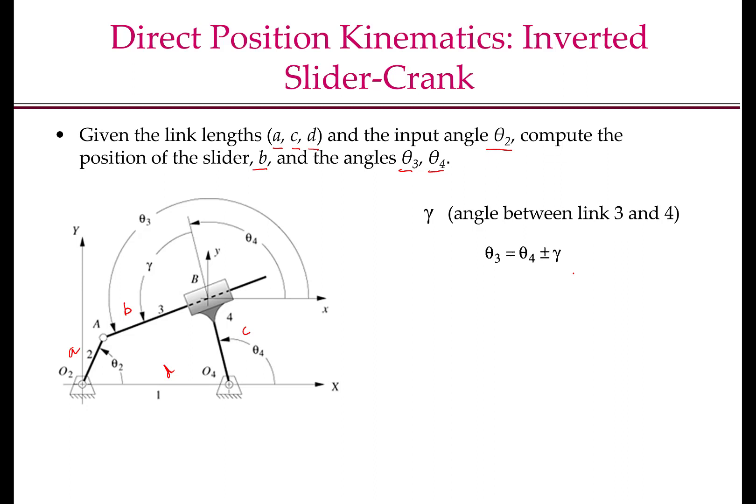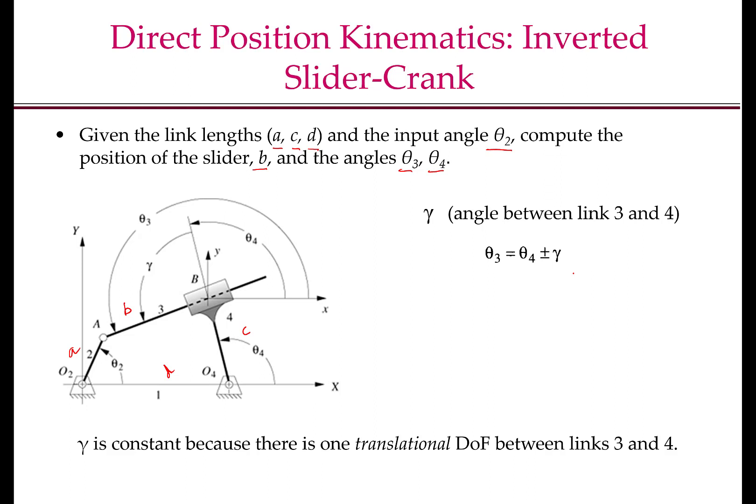So in essence, there are two unknown variables. To see why gamma should be constant, you should note that there is one translational degree of freedom between links 3 and 4. Therefore, although theta-3 and theta-4 may change, the angle between links 3 and 4 cannot change, because there is only a translational degree of freedom — there is no rotational degree of freedom.